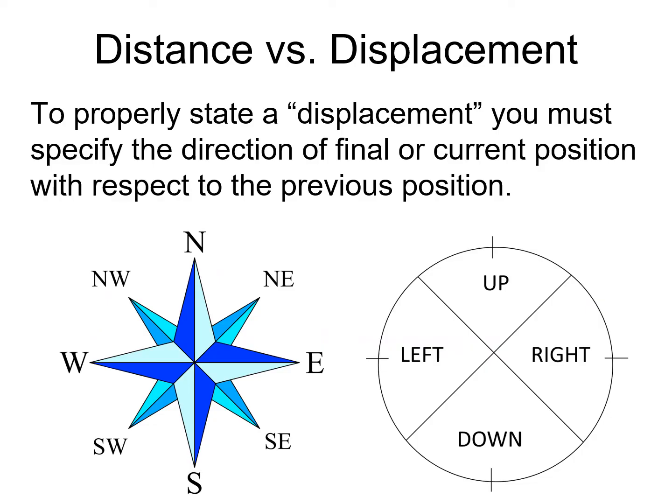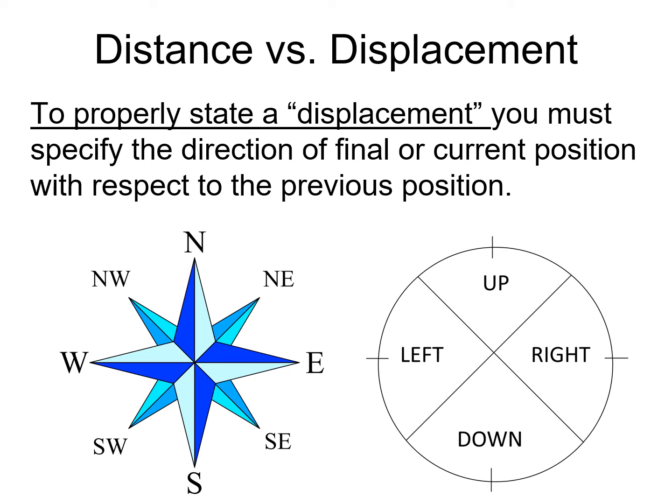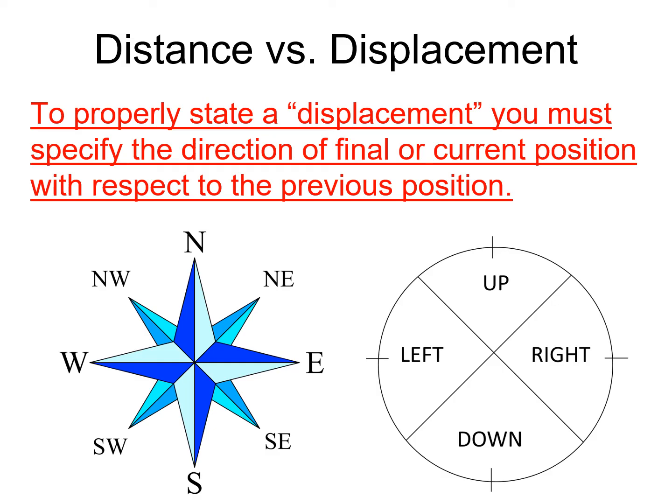So let me just reiterate that point. To properly state a displacement, you must specify the direction of final or current position with respect to the previous position. It can be up, down, left, right, positive, negative, one of the cardinal compass directions or even a given angle on a compass. Some way has to be designated. In this class, we will most often use positive and negative. And for example, if we throw something up and then it comes back down, we are going to have to agree. Is going up positive or is going up negative? We'll get to that in a later lesson. But there must be agreement so that we all understand what our displacement is.